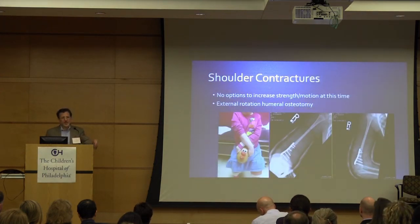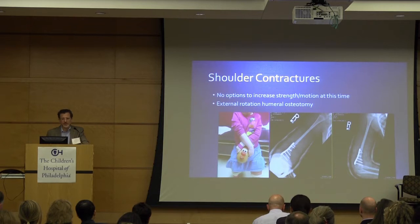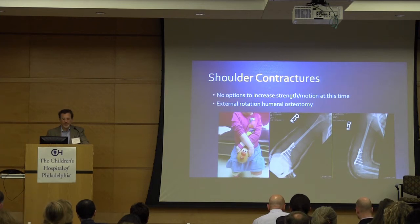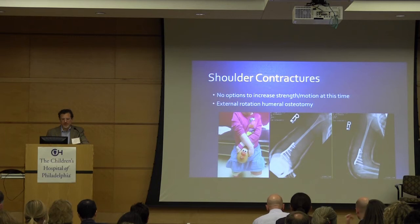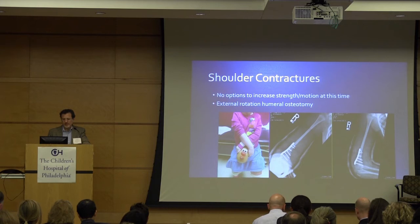Going down the list from the shoulder down, shoulder contractures — we really don't have any options to increase strength of motion at the shoulder. The only thing we can really fix is rotational deformity. External rotation humeral osteotomy has become a mainstay in many of our practices. You see this crossover grasp pattern grabbing Mr. Potato Head, and there's the osteotomy to improve that.